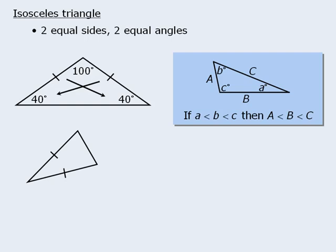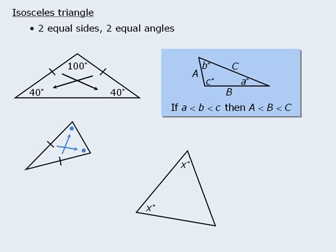This isosceles triangle has two equal sides, so which two angles must be equal? Well, the two angles that are opposite the two equal sides must be equal, so we will denote this as follows. What about this isosceles triangle? Here we are told which two angles are equal, and we must determine which two sides are equal. Well, the two sides that are opposite the two equal angles must be equal, so we will denote this as follows.